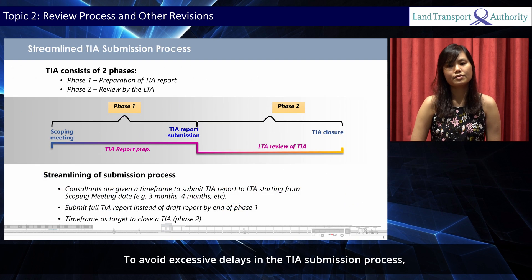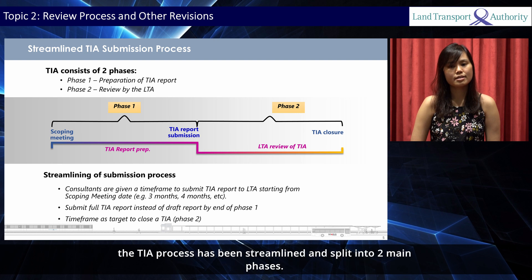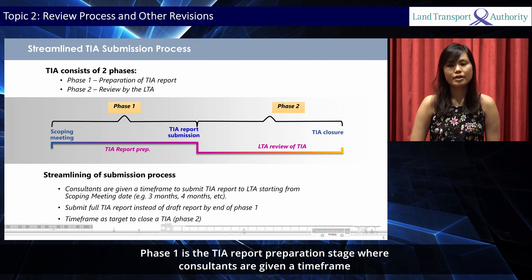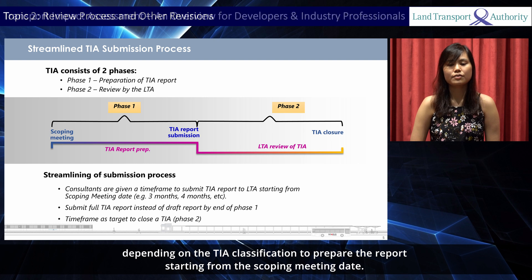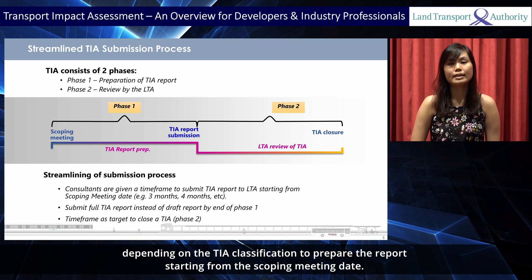To avoid excessive delays in the TIA submission process, the TIA process has been streamlined and split into two main phases. Phase 1 is the TIA report preparation stage, where consultants are given a time frame depending on the TIA classification to prepare the report starting from the scoping meeting date.